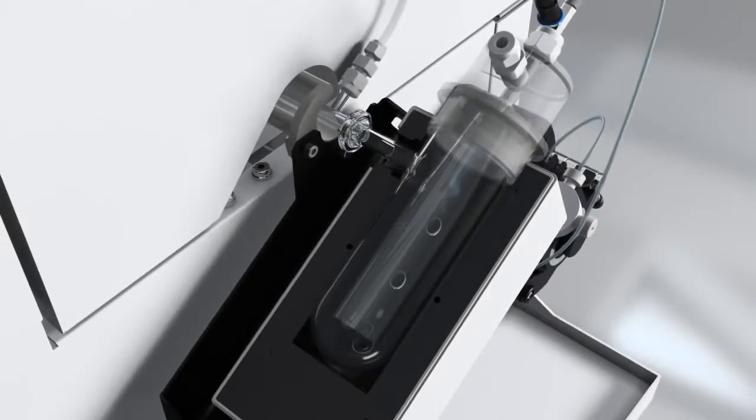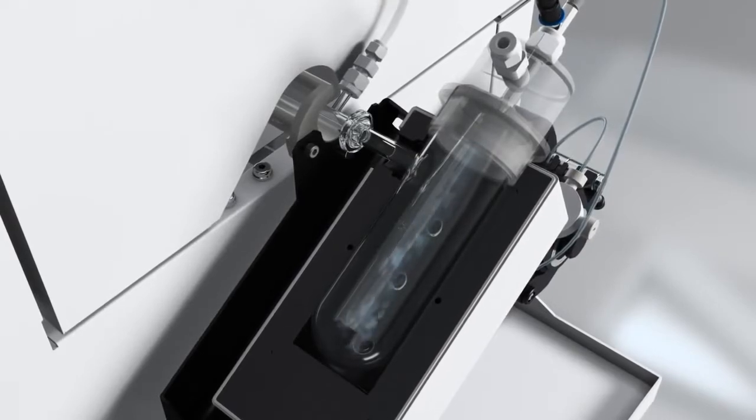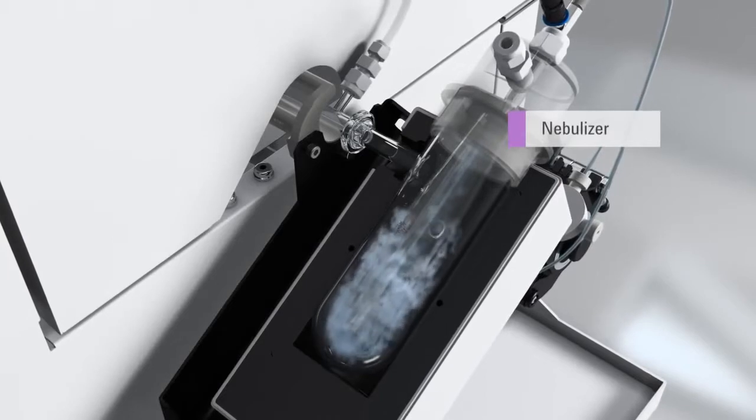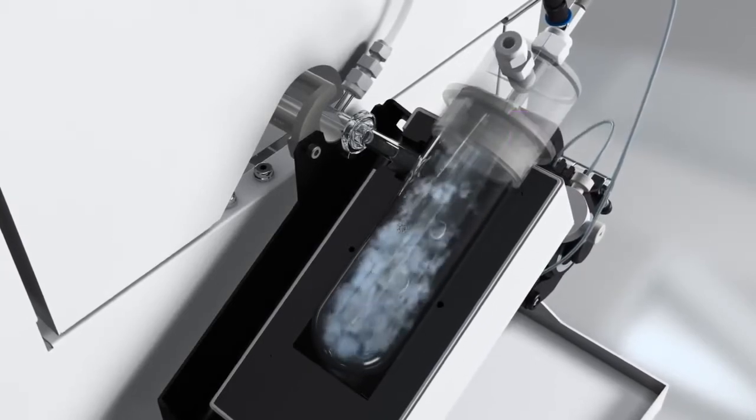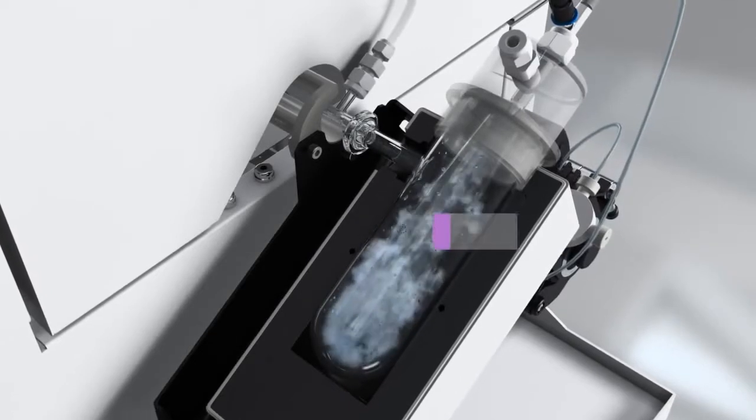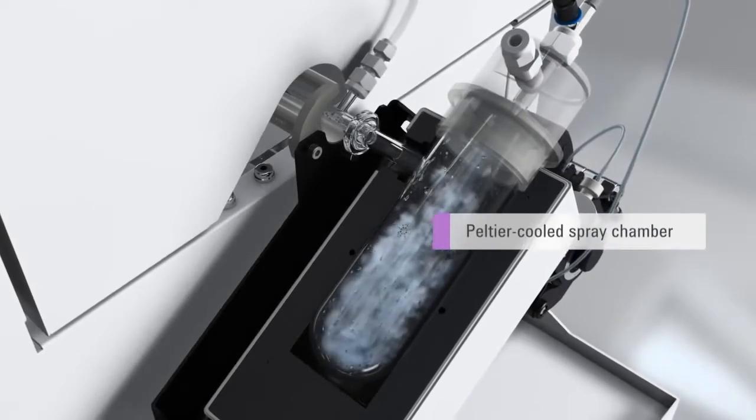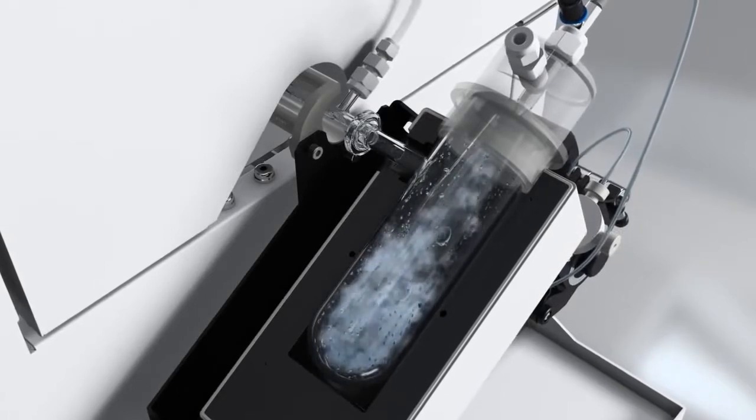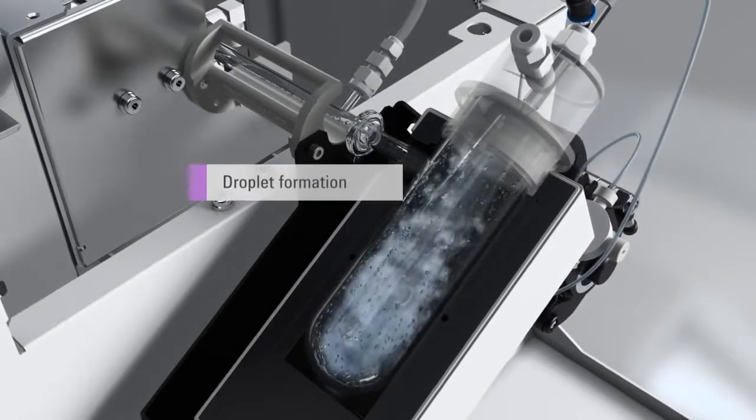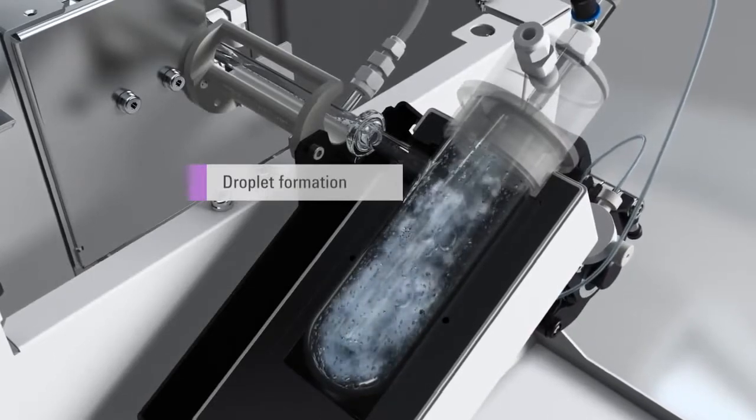The sample is introduced into one of Agilent Technology's specially designed low-flow nebulizers, where it mixes with argon gas to form a fine aerosol. The aerosol passes through the double-pass Peltier cooled spray chamber, where the larger droplets are removed to increase plasma robustness. The small aerosol droplets leave the spray chamber and enter the transfer tube leading to the plasma.